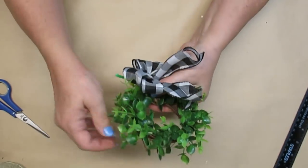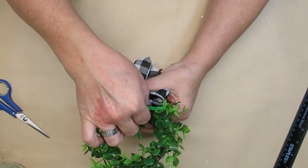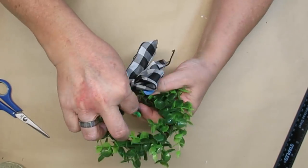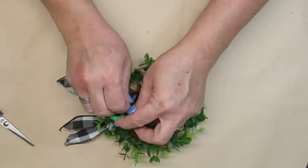I'm going to wrap the chenille stem around the wreath and then twist it really well in the back and then just fold the ends over. This is also going to allow me to change out the color of the bow or the style of the bow for the seasons if I want to.